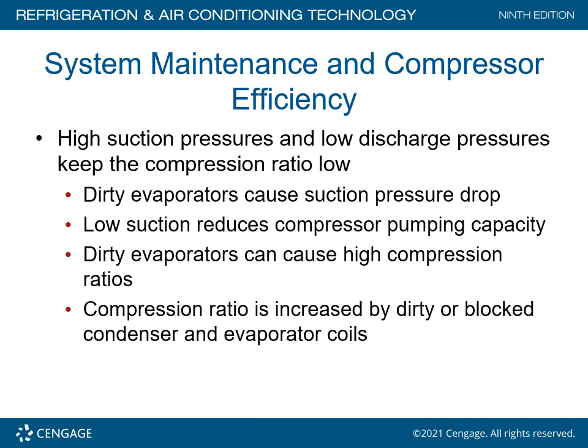For system maintenance and compressor efficiency: high suction pressures and low discharge pressures keep the compression ratio low. Dirty evaporators cause suction pressure to drop — low suction reduces compressor pumping capacity and causes high compression ratios. Compression ratio is increased by dirty or blocked condenser or evaporator coils. Bottom line: you must have a clean evaporator coil and a clean condenser coil for the system to operate at peak efficiency.